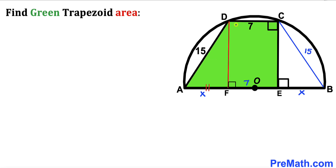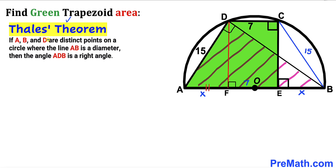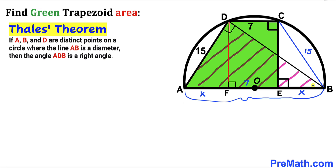Now let's connect point D to point B. Let's recall Thales' theorem: if A, B, and D are distinct points on a circle where AB is the diameter, then angle ADB is a right angle. Since A, B, and D are on this semicircle and AB is the diameter, angle ADB is 90 degrees.